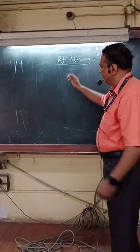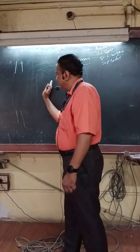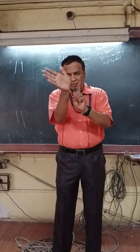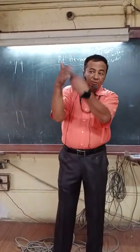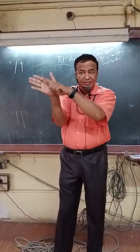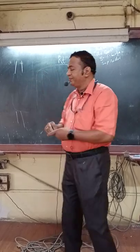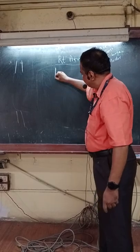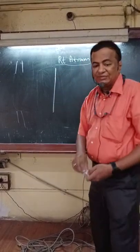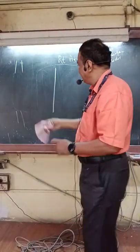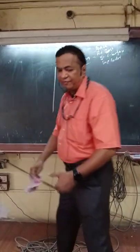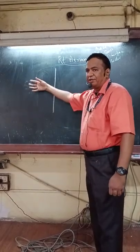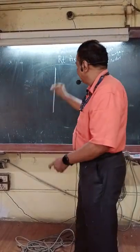So when we cut open, we take a cut and open it like this. So now what you see here is the anterior wall. What we see is, in the anterior wall, I have cut it open and reflected here, so what I am drawing here is the anterior wall.